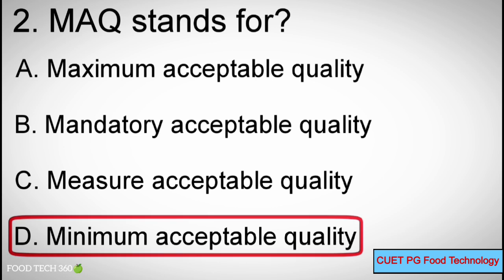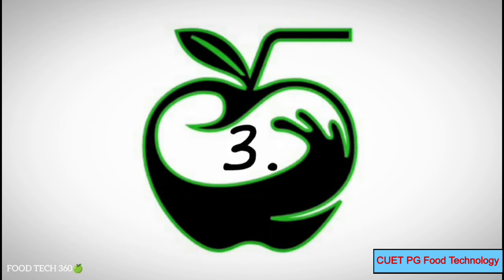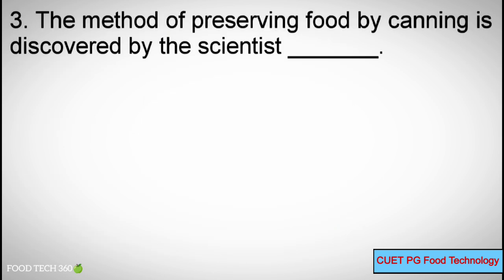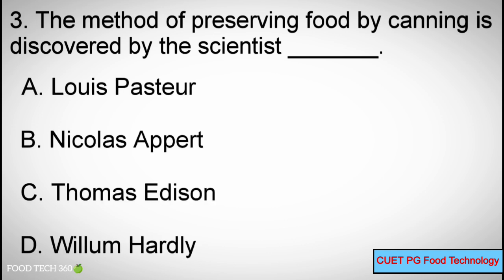Question number 3. The method of preserving food by canning was discovered by which scientist? Options: A) Louis Pasteur, B) Nicolas Appert, C) Thomas Edison, D) William Hurley.